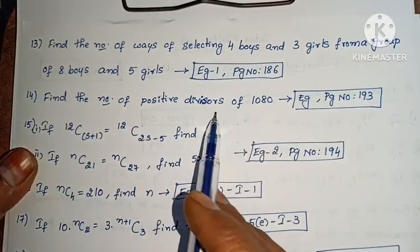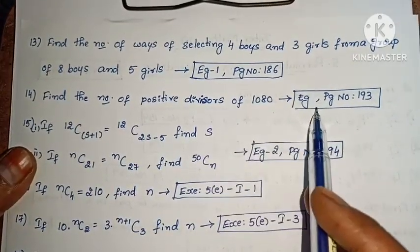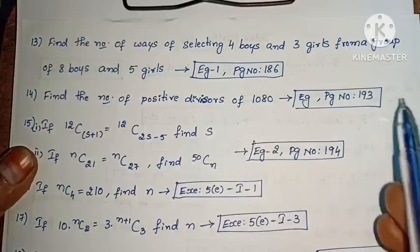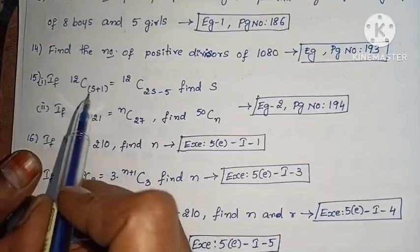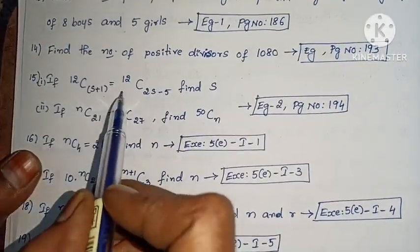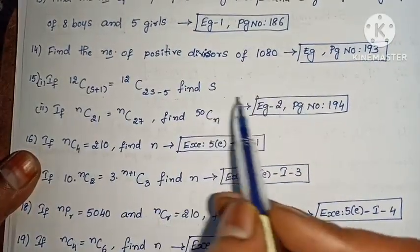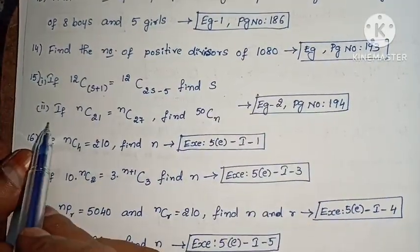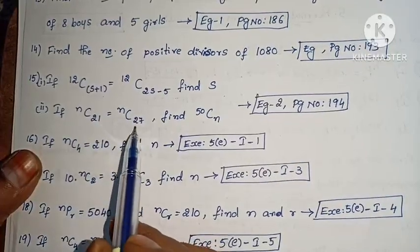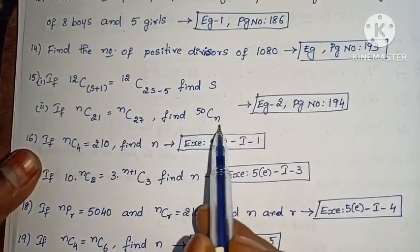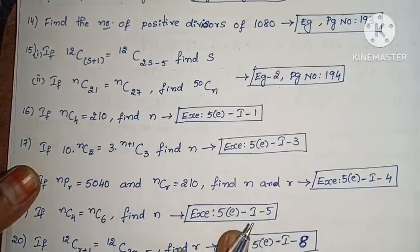Next: find the number of positive divisors of 1080 (page 193). Next: if 12Cs plus 1 equals 12C(2s minus 5), find s. Next: if nC21 equals nC27, find 50Cn (Example 2, page 194).